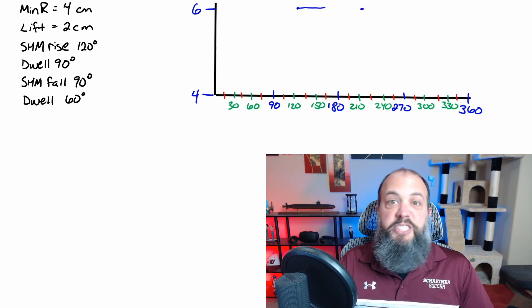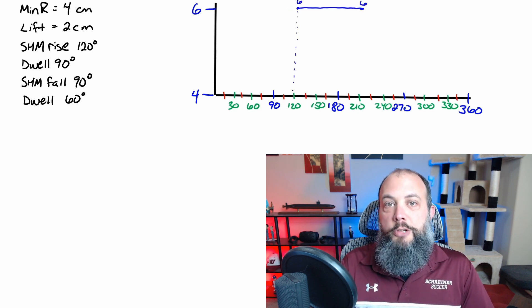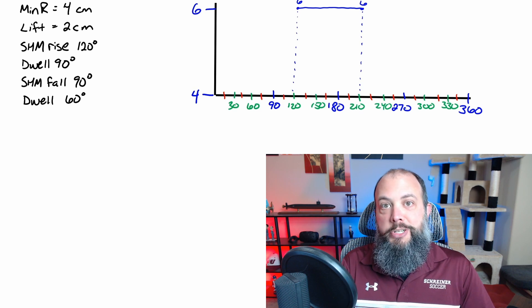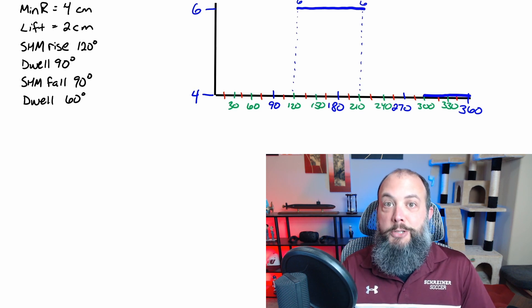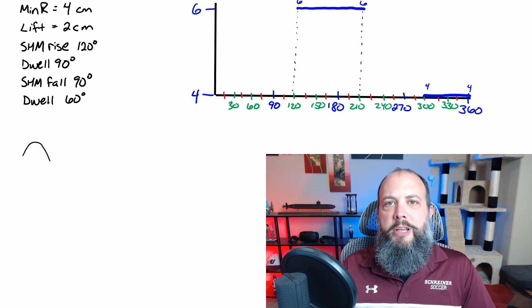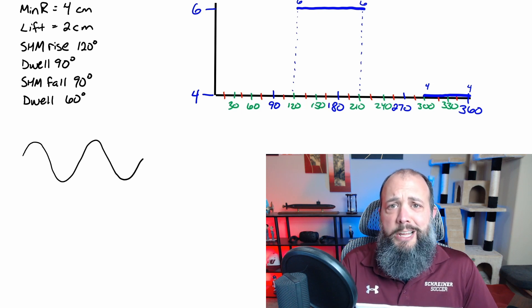I'm starting off by plotting the easiest parts first, the dwells. The one along the top is going to start after 120 degrees, and the one at the end is going to be the final 60 degrees. And I drew a sine wave here to help remind you just what a sine wave looks like.